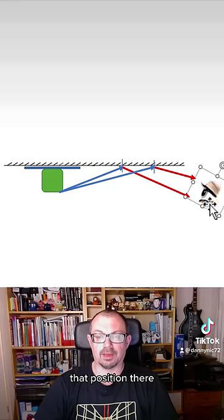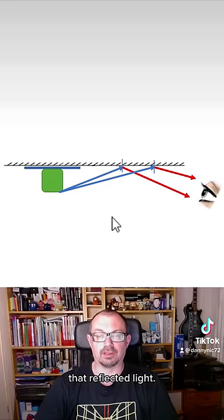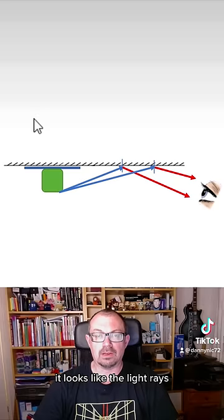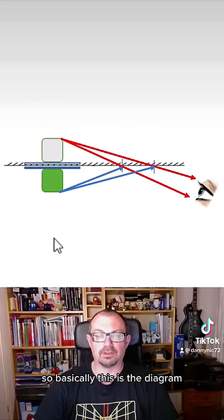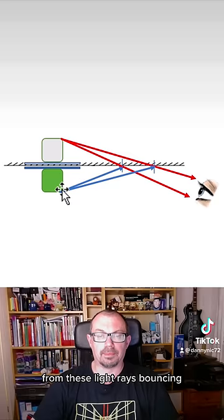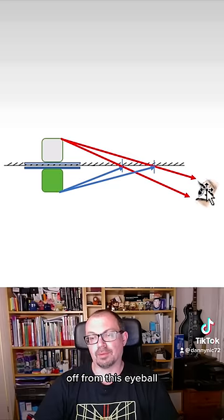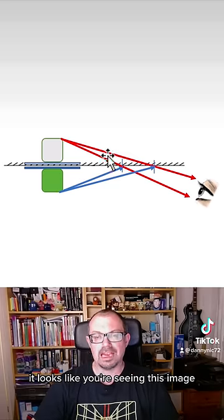If you put your eye at that position there, then you're going to see that reflected light. From the position of the observer, it looks like the light rays carry on into the mirror. So basically this is the diagram you're getting from these light rays bouncing off from this eyeball that's quite close to the mirror.